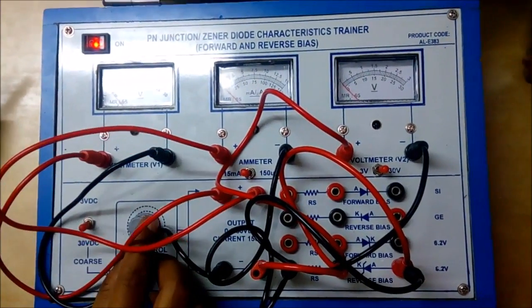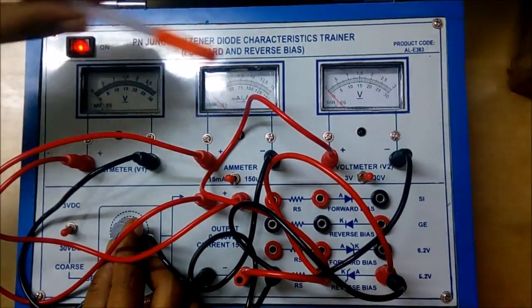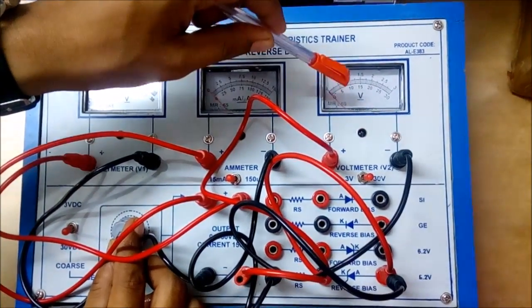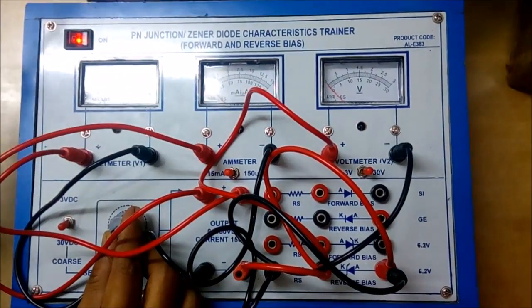As per the procedure in the PN junction, we are going to perform it in a similar way. Here the 0.5 would be of one division, so we will be taking 1, 2, 3, 4, 5 and so on.